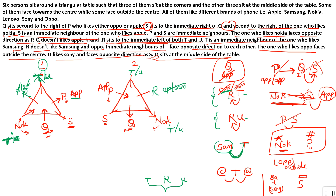In the second case as well, if T is placed as P's neighbor, then the two neighbors are P and R. R never likes Samsung and P already likes Apple — so Samsung has no space there, meaning T cannot come here either. So T comes here and U comes here. Since T is an immediate neighbor of Samsung, the R-side won't have Samsung, so Samsung goes on the other side. In case one, Samsung also goes on the other side. Now, R's direction: in the first case T's neighbor faces outside, so the second neighbor R faces inside; in the second case, T's neighbor faces outside so R faces inside the center.